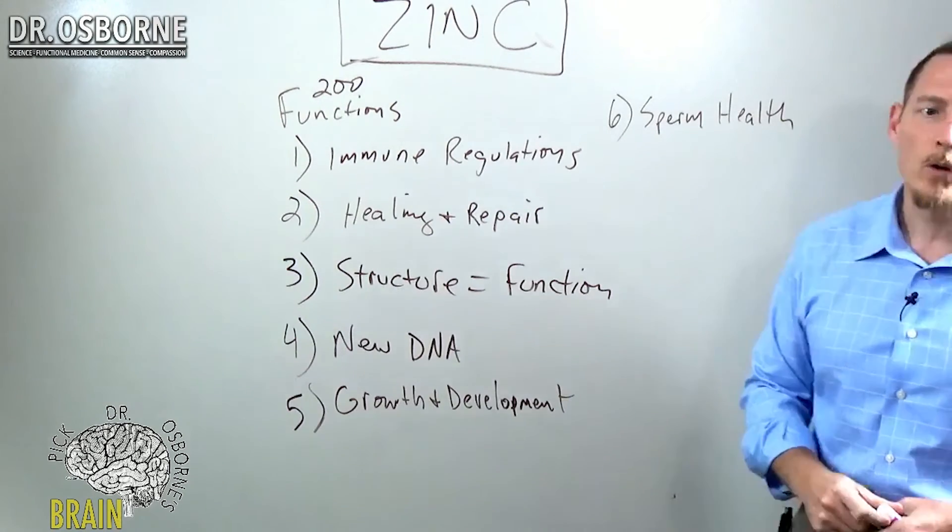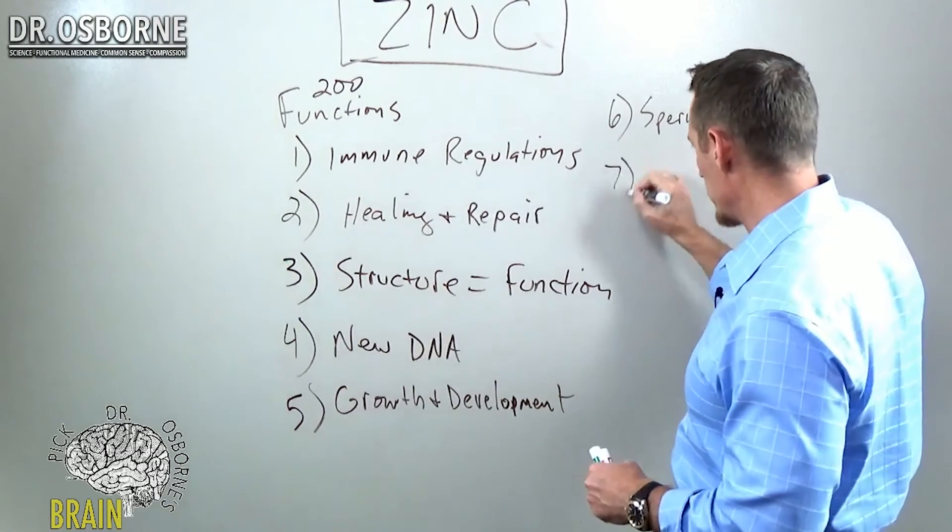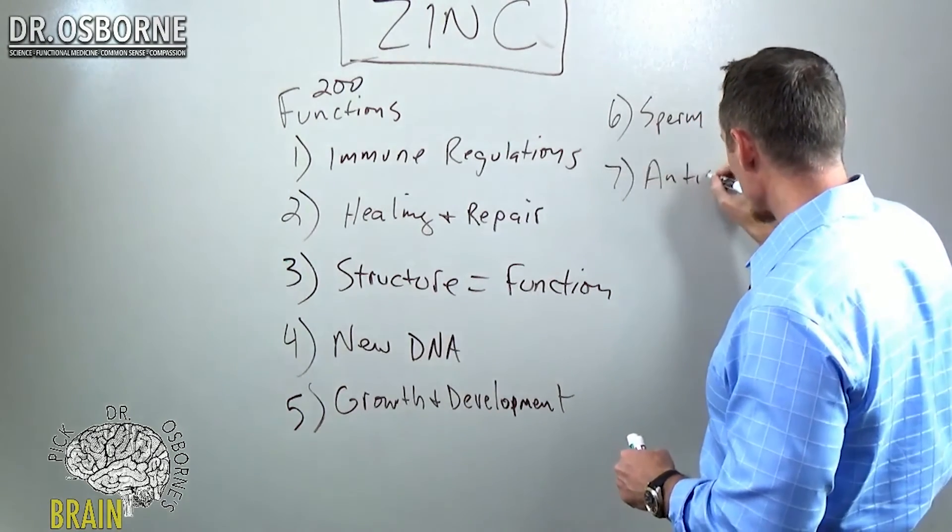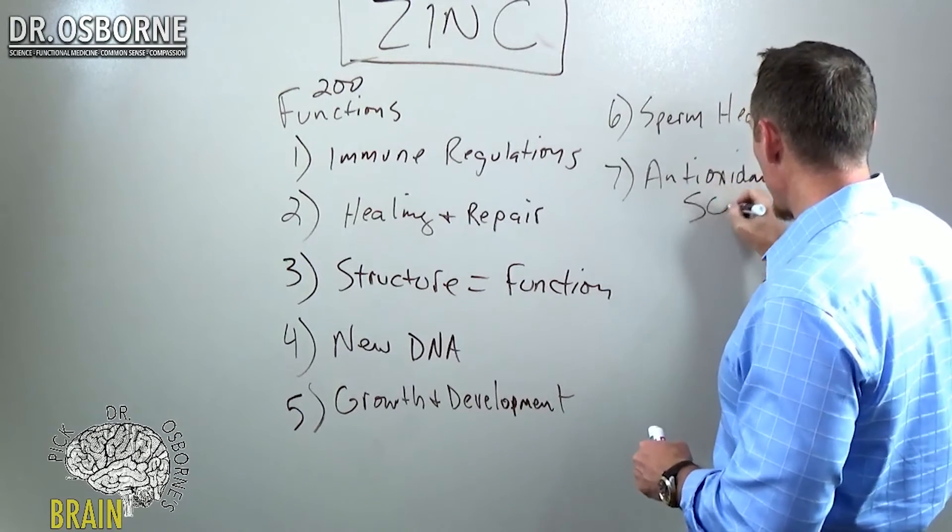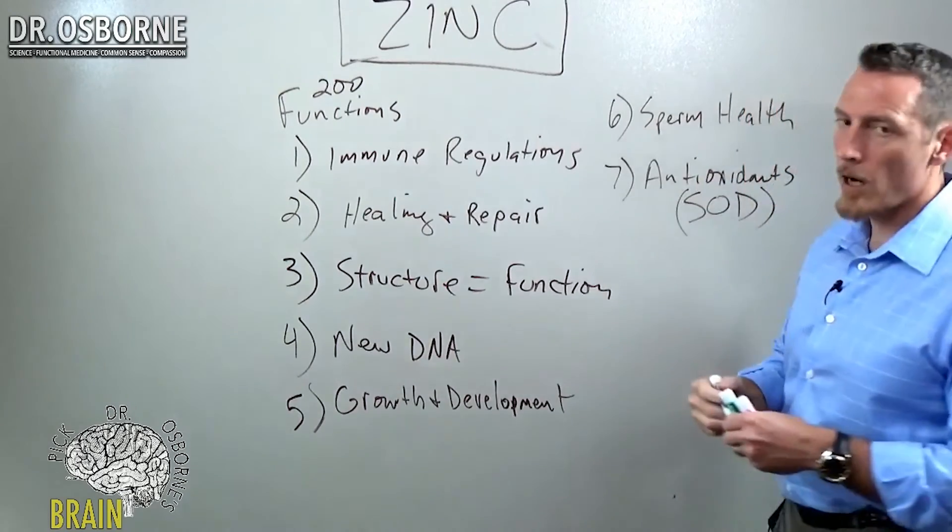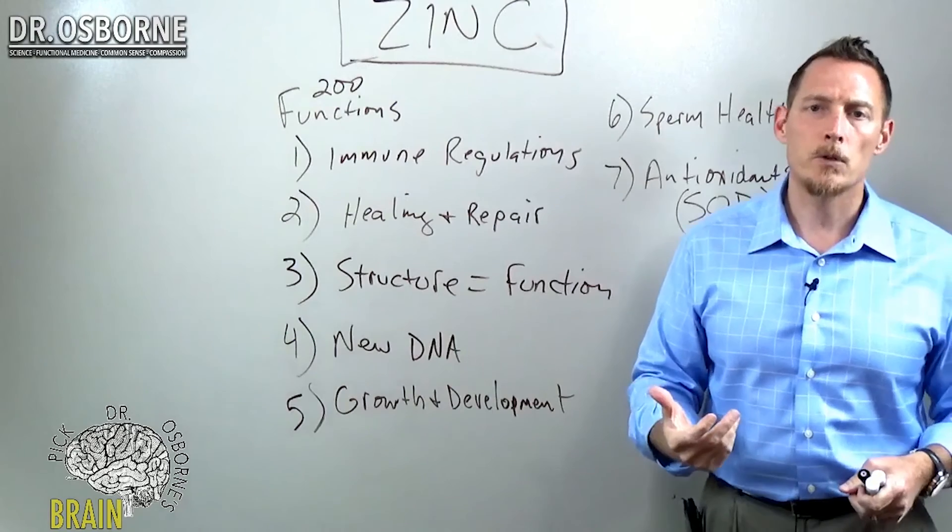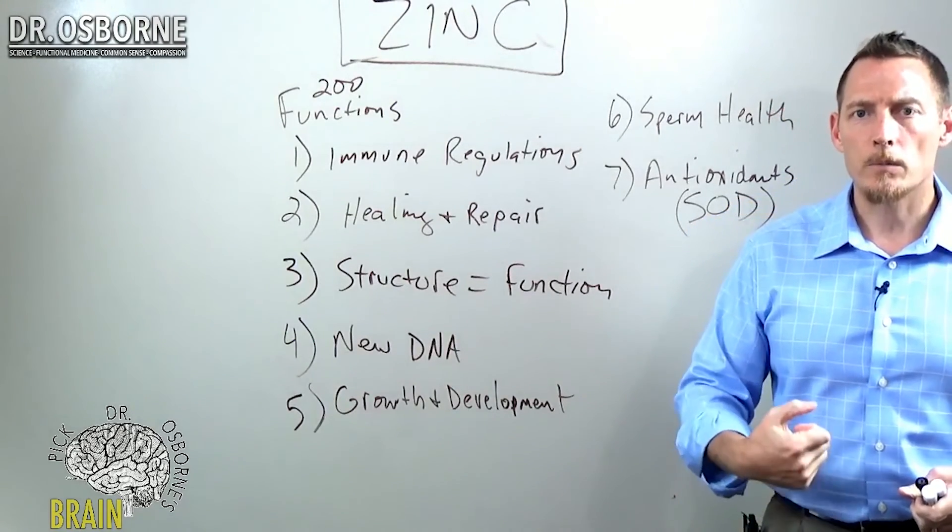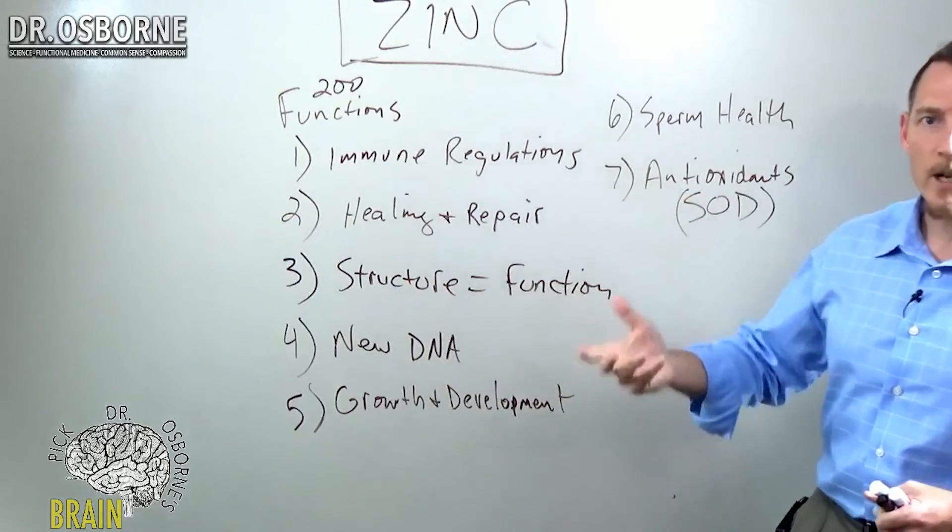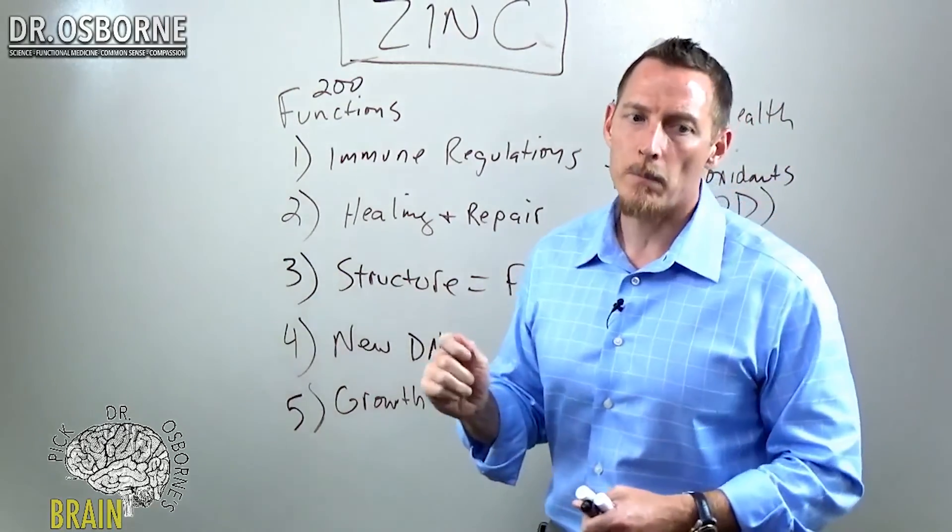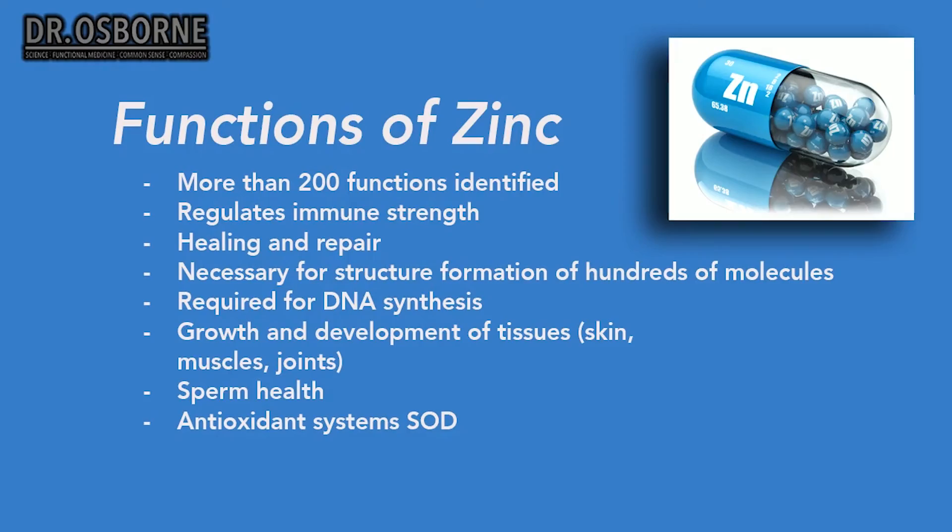So sperm health, very critical function of zinc. And then zinc also serves as an antioxidant system. Antioxidants - there's actually a system in your body called SOD that stands for superoxide dismutase. It's a very potent enzyme protein that helps to regulate detoxification. It helps to regulate how well your antioxidant systems are working, and zinc is again what starts that motor. So those are the main functions of zinc.